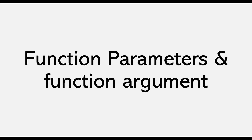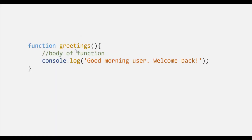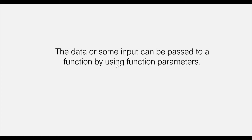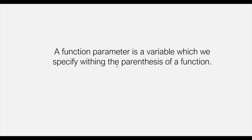In this lecture you will learn what a function parameter and function argument are and how they are different from each other. In the last lecture we created the greetings function which simply logs a message 'good morning user welcome back' to the developer console. We have not passed any data to this function, but it is also possible to pass data to a function which can then be used inside it. Data or input can be passed to a function by using function parameters.